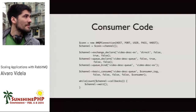On the consumer side, you create the connection, declare the exchange, declare the queue, bind the queue to the exchange — you could use a routing key but in this case we are not. Then call basic_consume with the queue name, consumer tag (you can pass an empty string and let Rabbit create one), and options including whether you want to acknowledge messages. Then you have a while loop waiting for messages.